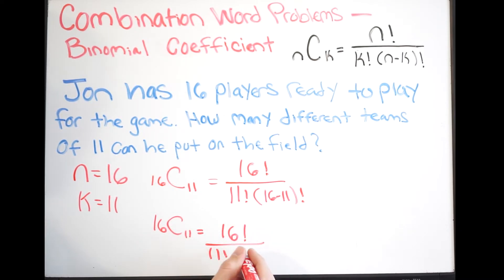And we know that 16 minus 11 is going to give us 5, so this is 5 factorial. So if you forgot how to write out a factorial, that just simply means we're multiplying consecutive integers starting from 1 and going to our designated value.